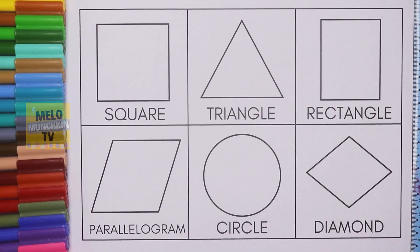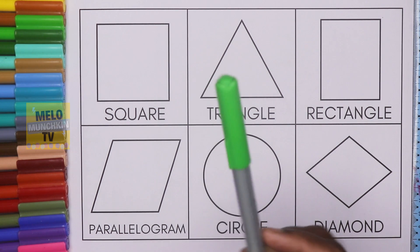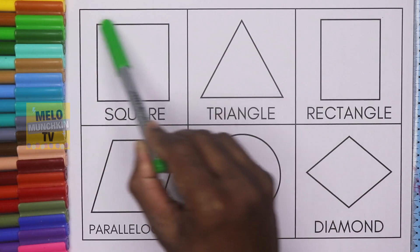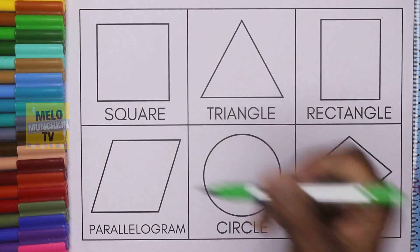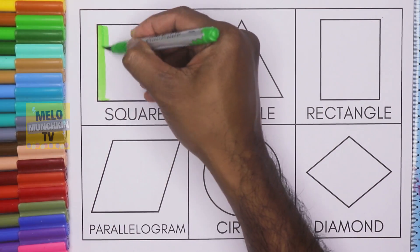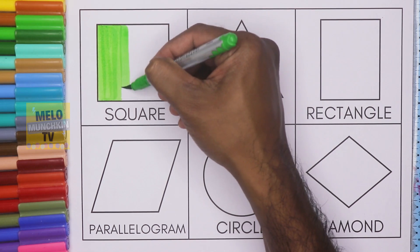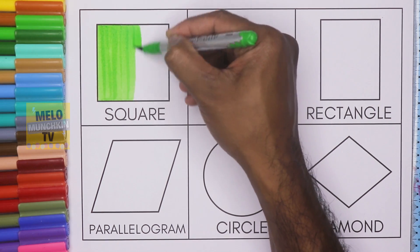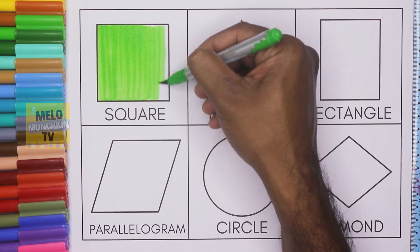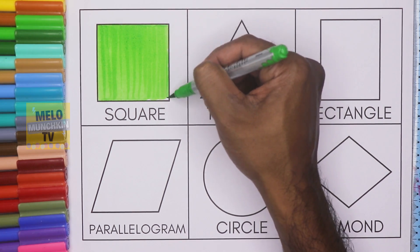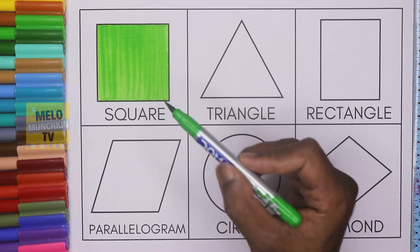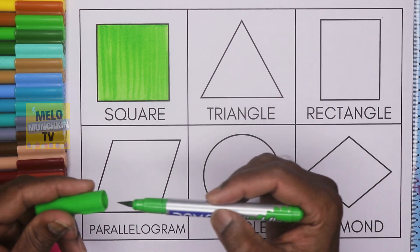Hello kids, today we will learn shapes — six basic shapes with colors. So let's get started. First, I'll take light green color to color the square. This is square, let's color it. This is square and the color is green.